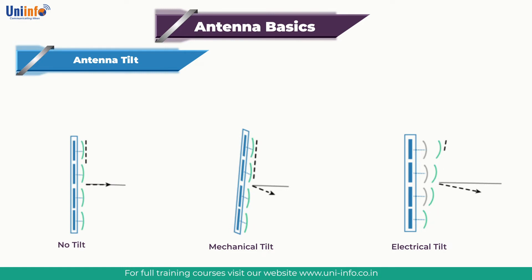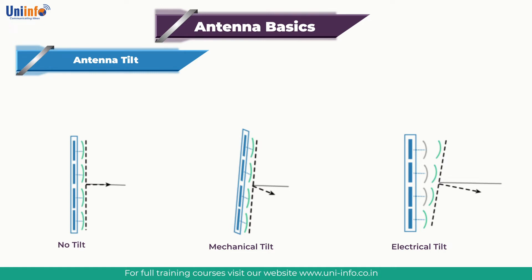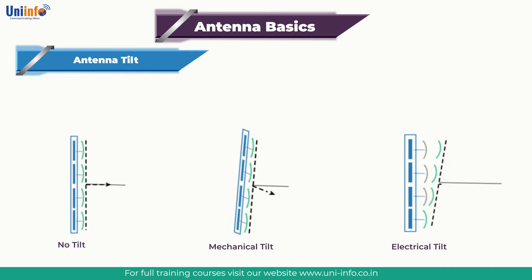Mechanical tilt is straightforward: tilting the antenna through specific accessories on its bracket, without changing the phase of the input signal, modifies the diagram and consequently the signal propagation direction. For electrical tilt, the modification of the diagram is obtained by changing the phase characteristics of each element in the antenna array.